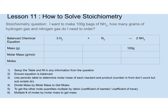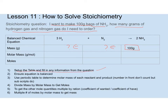So these are the steps. First, we set up the table and fill in any information from the question. Here's the question: I want to make 100-gram bags of NH3. How many grams of hydrogen gas and nitrogen gas do I need to order? I set up the table, put in the balanced chemical equation, and fill in that I need 100 grams of NH3. Next, I ensure the equation is balanced — and it is.